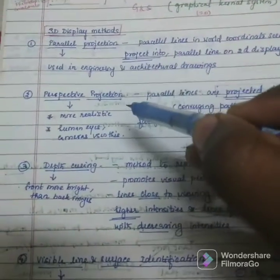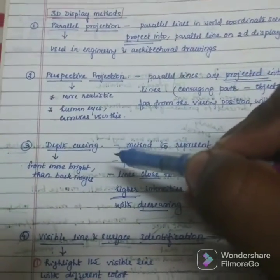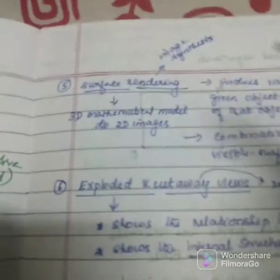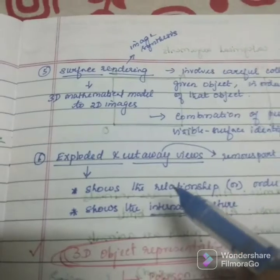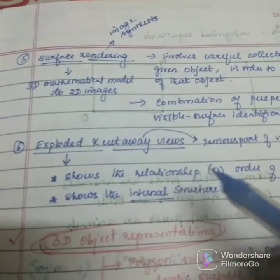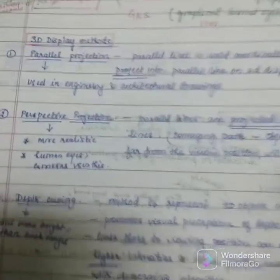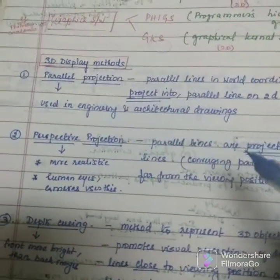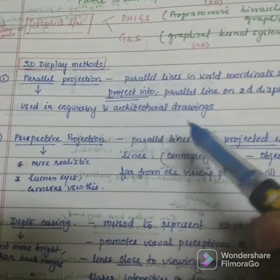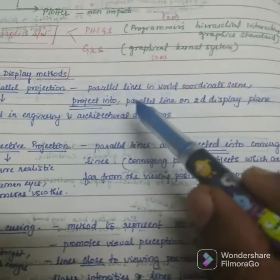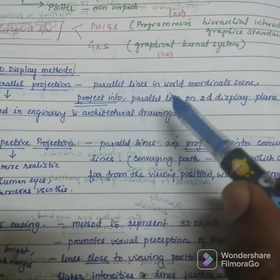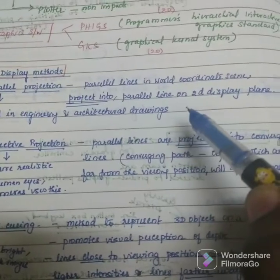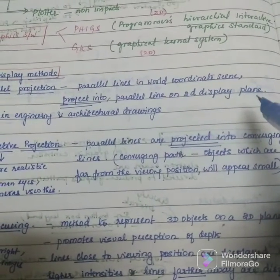Parallel projection. This parallel projection is used in engineering and architectural drawings. The parallel lines in world coordinate scene project into parallel lines on a 2D display plane.